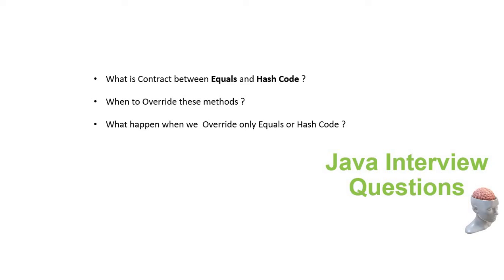Hello, welcome back to my TechShare channel. In this Java interview session, we need to discuss one of the fundamental questions. This question will be asked in most Java interviews to make sure how good the candidate is in the fundamentals of Java. The question is about what is the contract between the equals and hashCode method and when do we really need to override those methods?